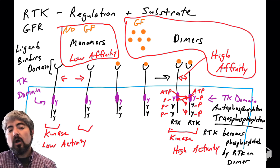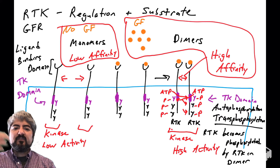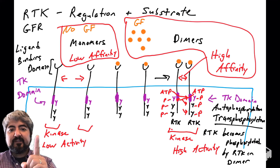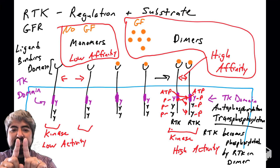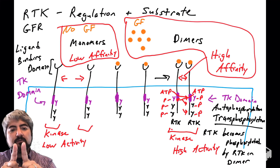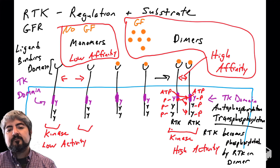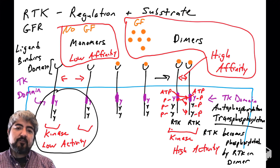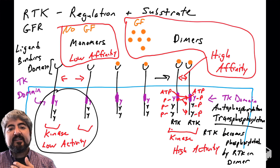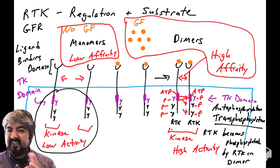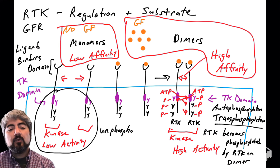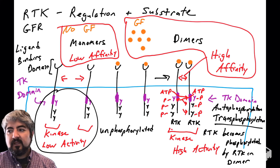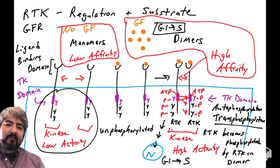Some papers refer to this as autophosphorylation — though technically the kinase isn't phosphorylating itself, it's phosphorylating its partner, which looks just like itself. Remember, these two receptors are identical to one another. So before growth factor binding, the tyrosines in the cytoplasmic tails are not phosphorylated because the kinase has very low activity.